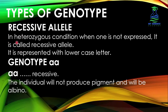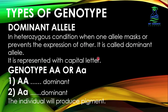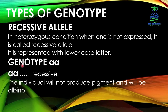What is a recessive allele? In the heterozygous condition, when one allele is not expressed, it is called the recessive allele. It is represented with a lowercase letter. In heterozygous condition, the allele whose effect is hidden due to the dominant allele and cannot express itself is called the recessive allele. So a person with genotype small a small a will have a recessive genotype. The individual will not produce pigment and will be albino — because the dominant allele capital A is absent and both recessive alleles are present, pigment production will not occur.